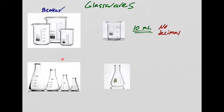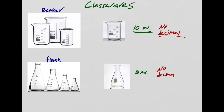Now, what are these ones? These are flasks — some people call them conical flasks, some call them Erlenmeyer flasks. They're flasks. Do you think the flask is more accurate than a beaker? It looks fancier, it has a little shape — but it's just as bad. You cannot have any decimal places. So if I measure 10 mL, I should just report 10 mL. No decimal places when you use a beaker and no decimal places when you use a flask.